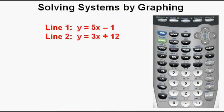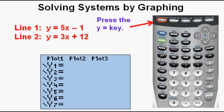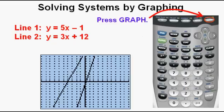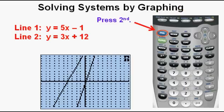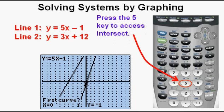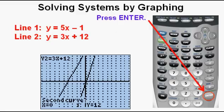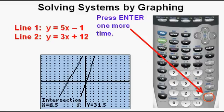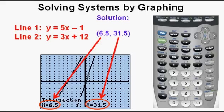Now we have this system of equations: line 1 is y equals 5x minus 1, and line 2 is y equals 3x plus 12. Go to the function editor by pressing the y equals key and enter the two functions. Next press the graph key, then press the second key, then press the trace key to access the calc menu. Press the number 5 key to access intersect. Press enter three times. We see the solution x equals 6.5 and y equals 31.5 at the bottom of the view screen.